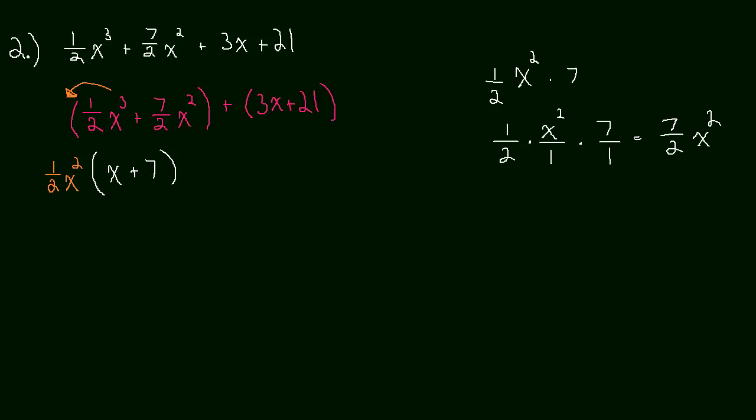So we factor that out. And this is what we're left with. Okay. On the other side, what are we going to factor out? We can factor out a 3. So let's do that. And then 3 times x is 3x and 3 times 7 is 21. Okay. And it turns out that this worked out nicely. We have an x + 7 in both terms. So this will become (1/2 x² + 3) times (x + 7).